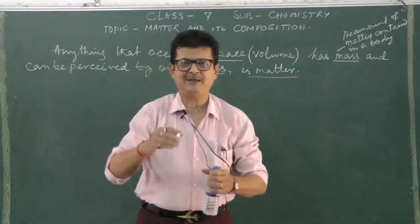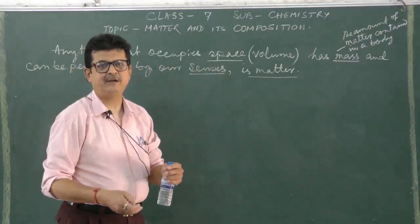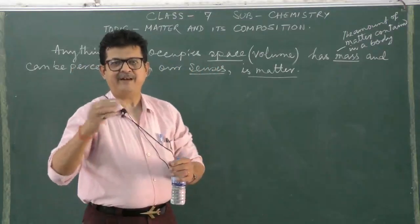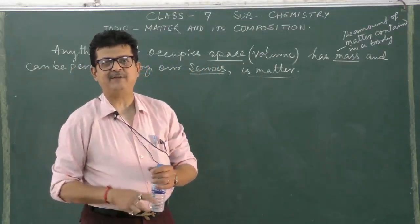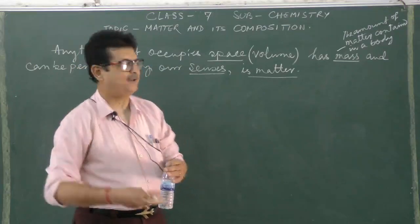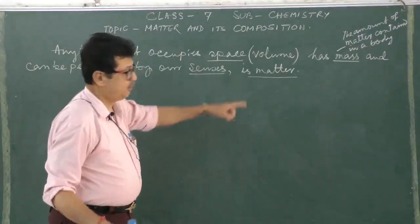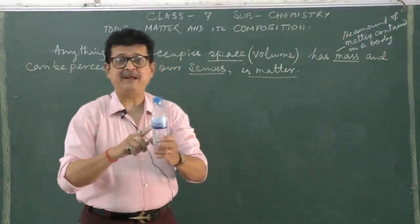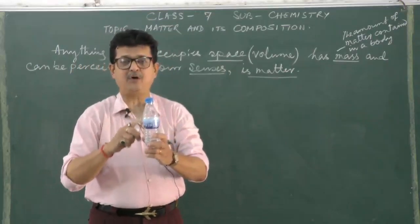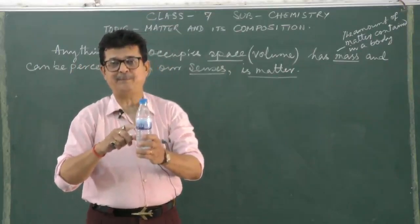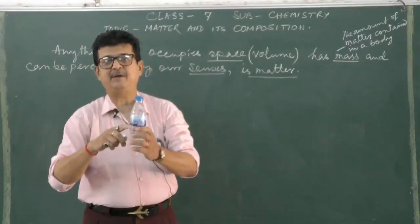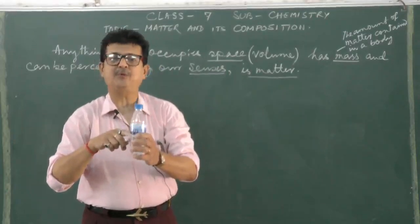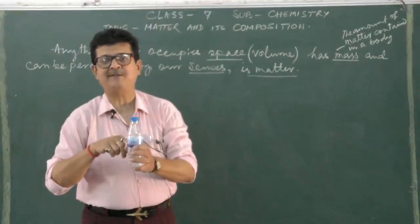Weight is actually the mass into gravitational force we call weight. Weight is a variable quantity. It depends on gravitational force and varies from place to place. So that thing not only occupies the space there and it also provides some weight for that. That means it has got mass.